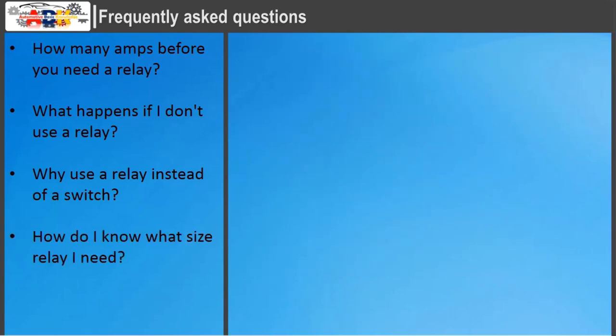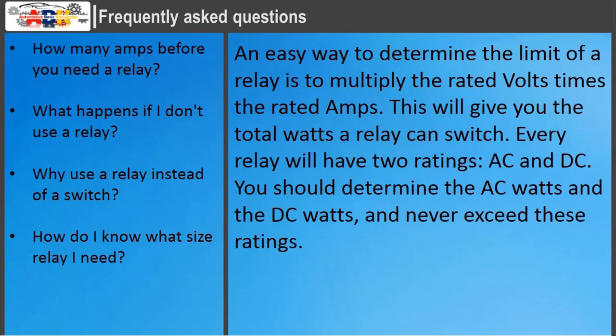How do I know what size relay I need? An easy way to determine the limit of a relay is to multiply the rated volts times the rated amps. This will give you the total watts a relay can switch. Every relay will have two ratings — AC and DC. You should determine the AC watts and the DC watts, and never exceed these ratings.